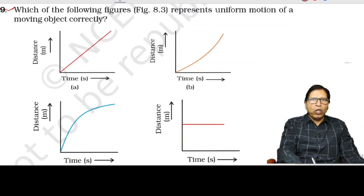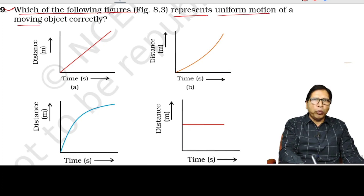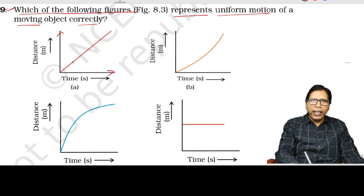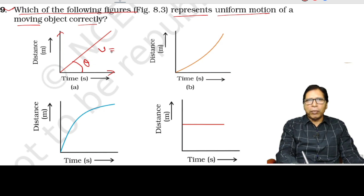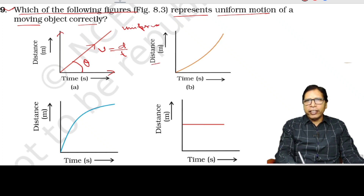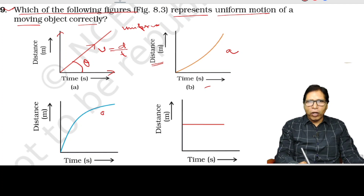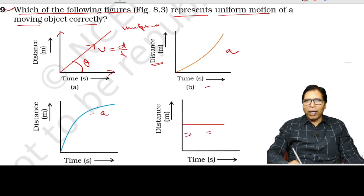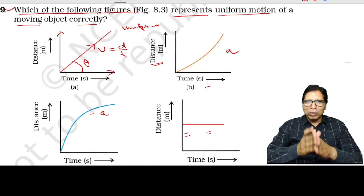Question number 9: which figure represents uniform motion of a moving object? Looking at the distance-time graph, distance increases and the angle made by the graph with the time axis is constant. The slope of the distance-time graph is the velocity. This graph represents uniform motion in a straight line — option A. The other graphs represent constant acceleration, constant retardation, and a stationary object respectively.